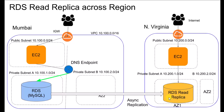For this assignment we are going to use the setup I had in Mumbai — a multi-AZ database already deployed. For North Virginia, I'm going to create a VPC with one public subnet and two private subnets for databases, then create a DB subnet group, and then create a read replica from the RDS instance in the Mumbai region.